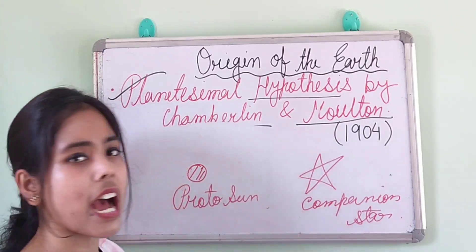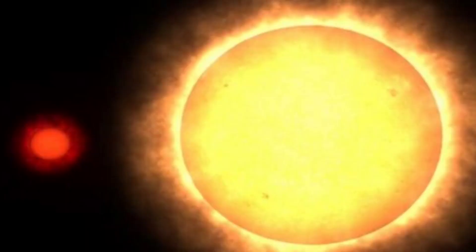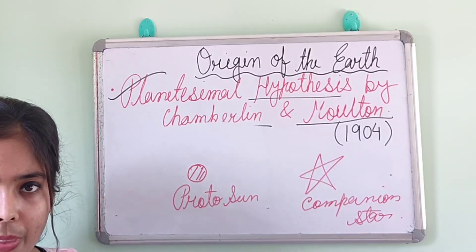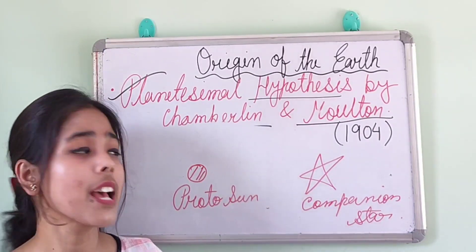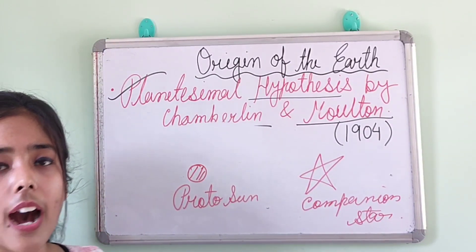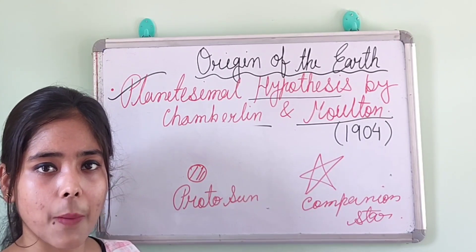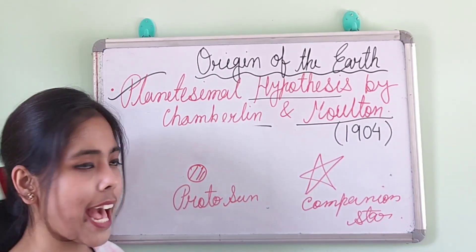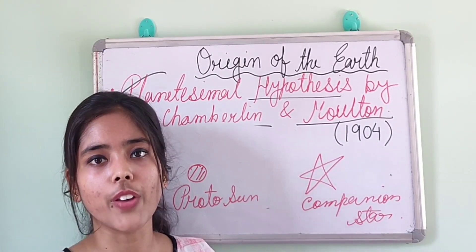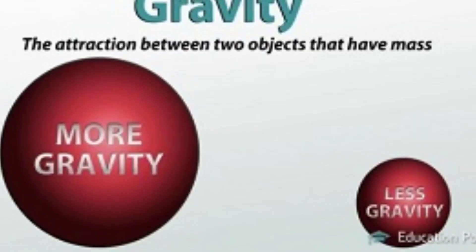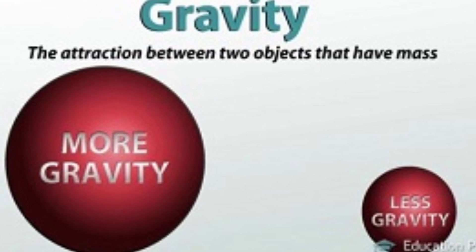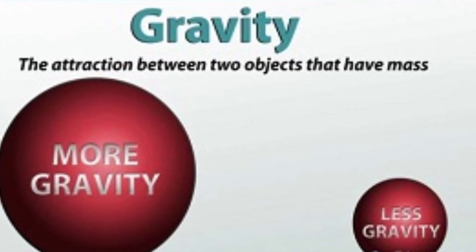There were only two heavenly bodies present in space. If you look at this picture, you can see the companion star is far bigger than the proto sun, and the proto sun is generally smaller than the companion star. Another important feature of the companion star is that its mass as well as its weight was also very high.